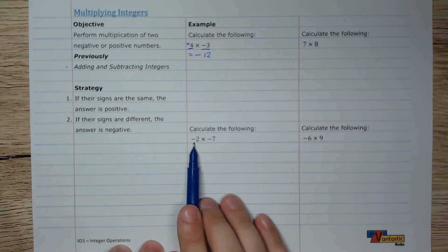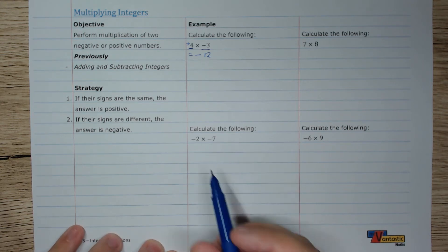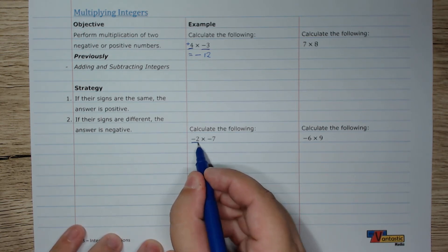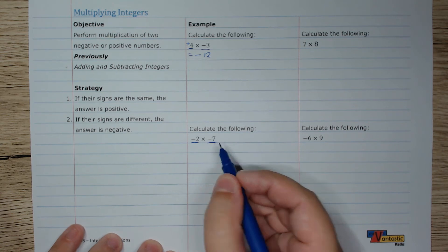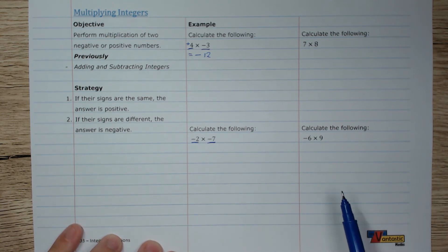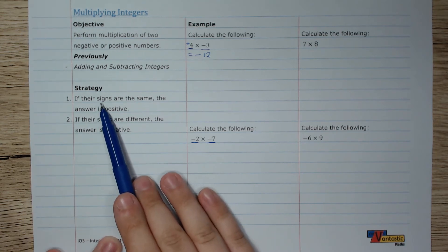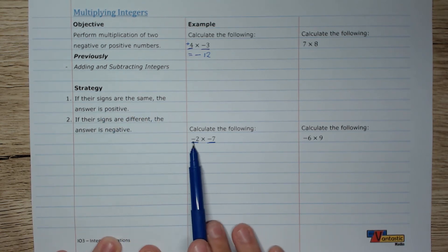In this problem, we have negative 2 times negative 7. We can see, easily, that both the 2 and the 7 are negative numbers. Our rules tell us that if the signs are the same, in this case, they're both negative, the answer is going to be positive.